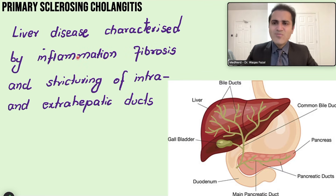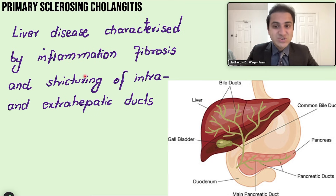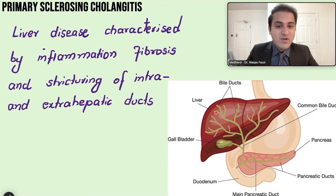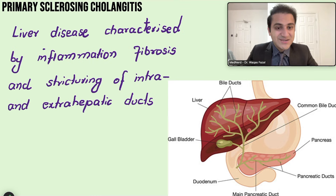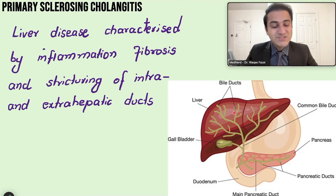Primary sclerosing cholangitis is an autoimmune disease characterized by inflammation, fibrosis, and stricturing of both intra- and extrahepatic bile ducts. Bile ducts drain bile from the liver into the intestines. When the immune system damages these ducts, it results in fibrosis and stricturing — that is primary sclerosing cholangitis.